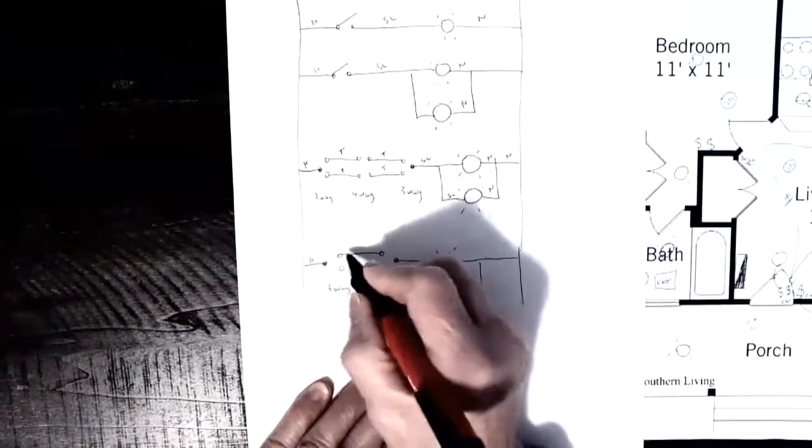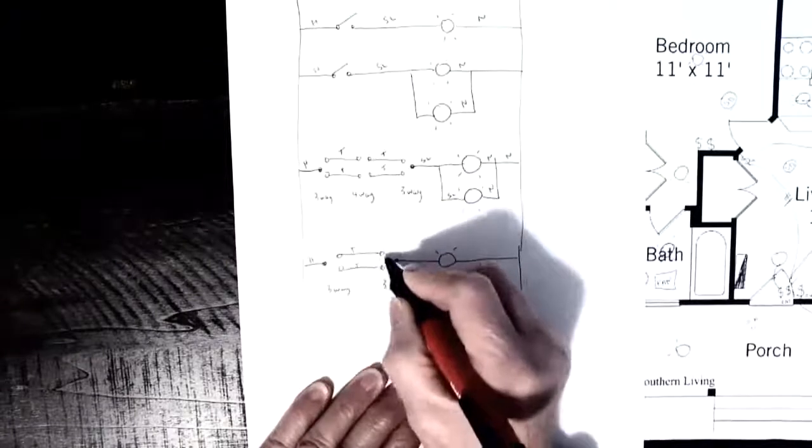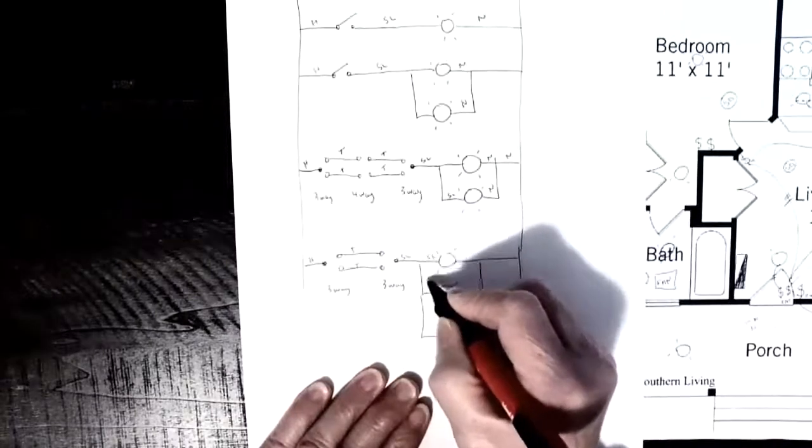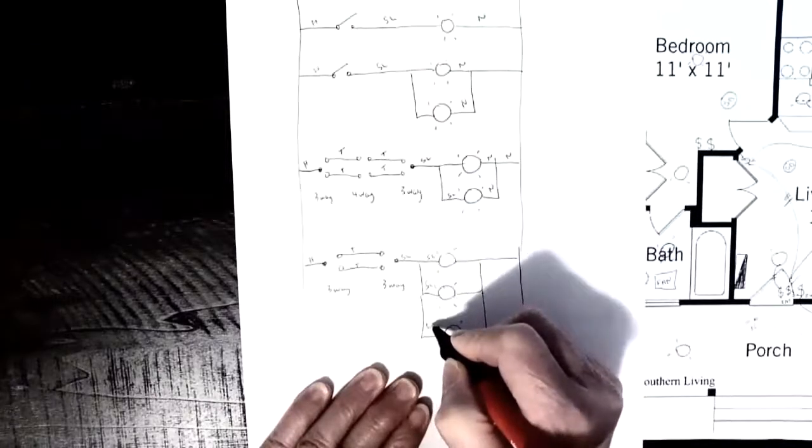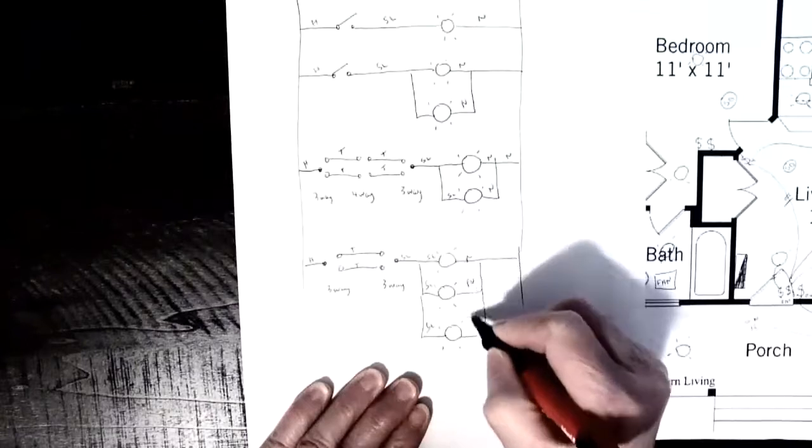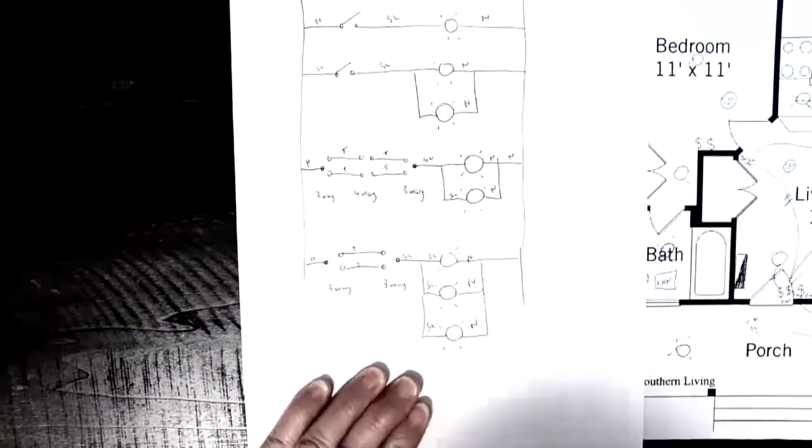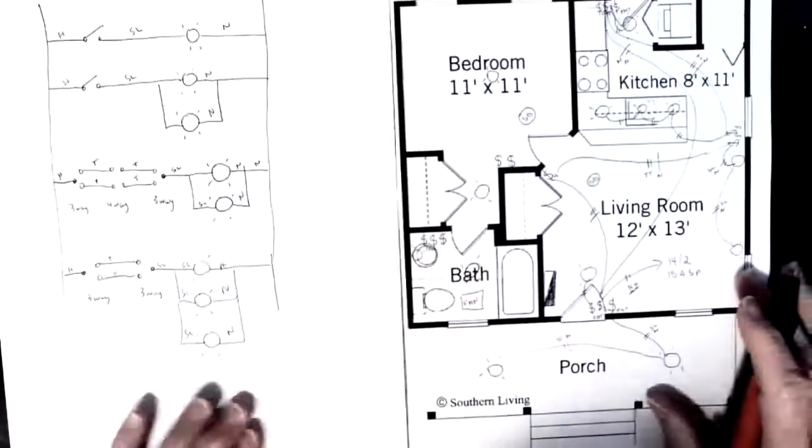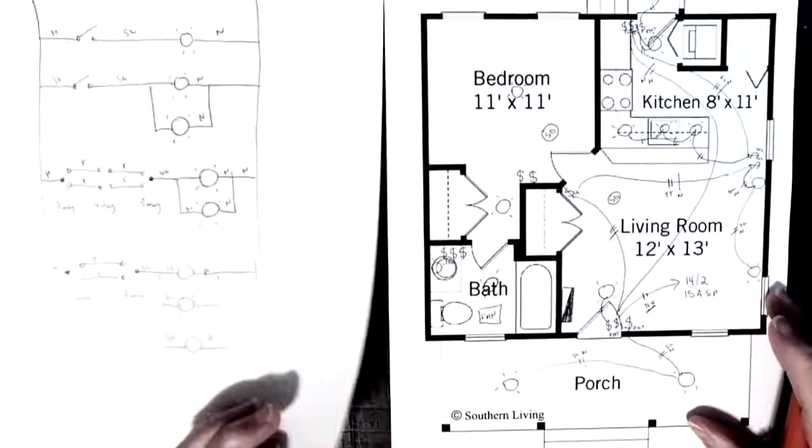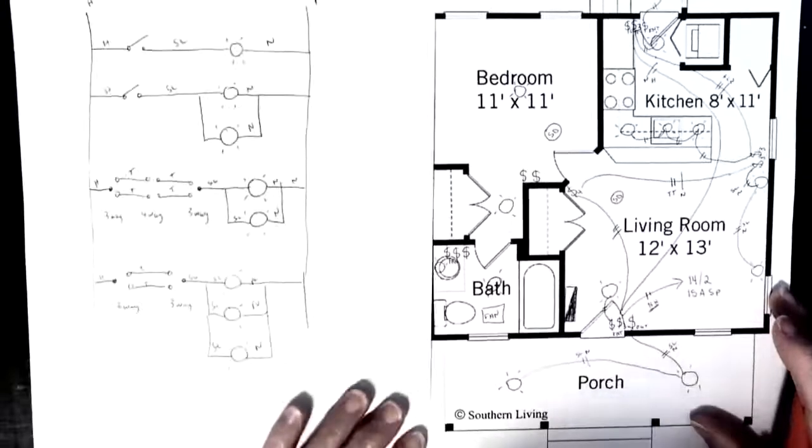So we have a hot going to the common. We have travelers going to the second three-way. We're going to have a switch leg leaving that second common. The switch leg goes to each one of those lights, and then our neutrals head back to the panel.